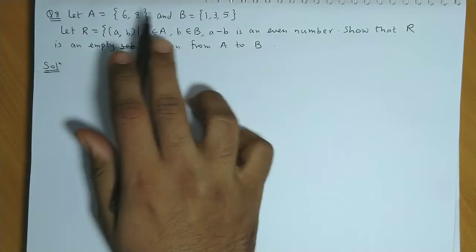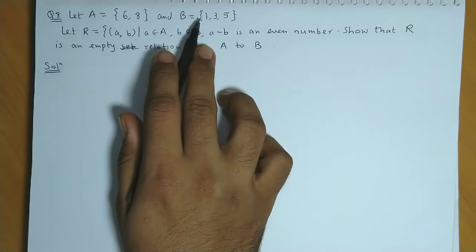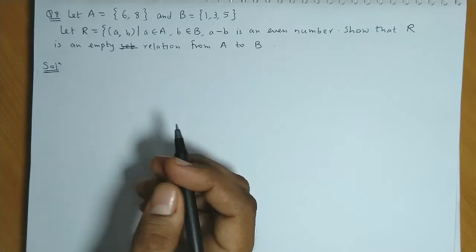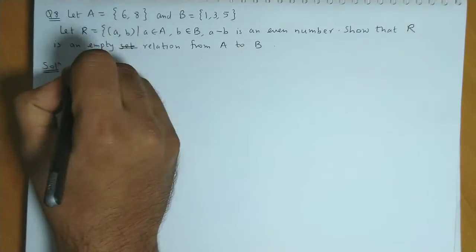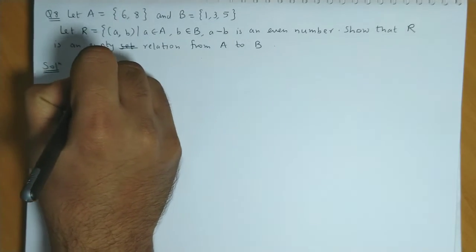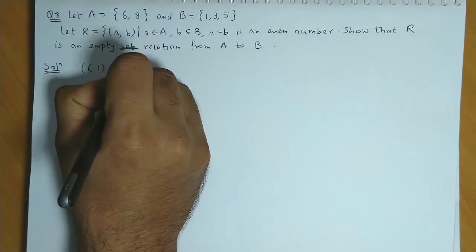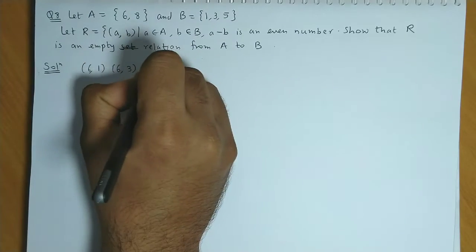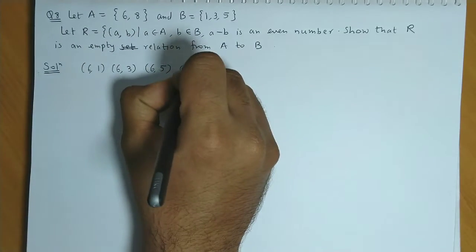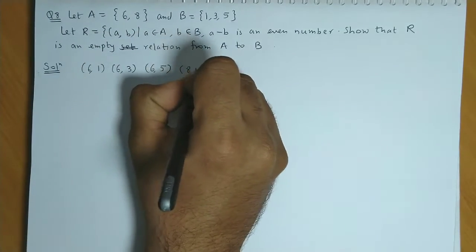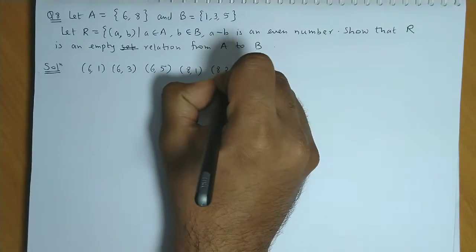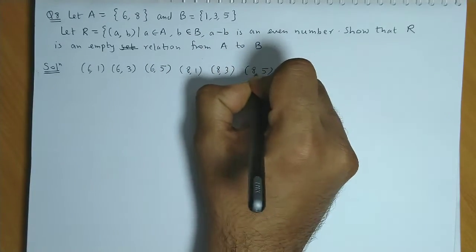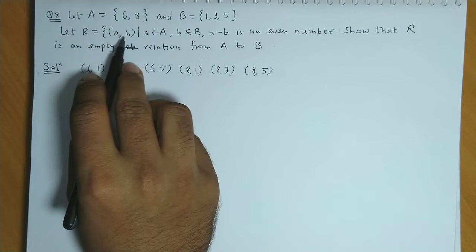Now let's make ordered pairs from A to B. The possible ordered pairs will be (6,1), (6,3), (6,5), then (8,1), (8,3), (8,5). So these are the ordered pairs (a, b).